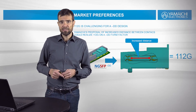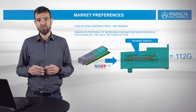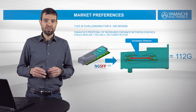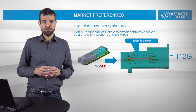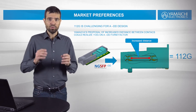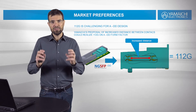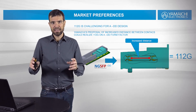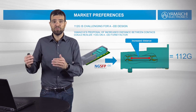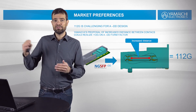We think that 112G is very challenging for the double density approach. With NGSFP, Yamaichi suggested significantly increasing the distance between the first and the second row. This was possible because we skipped one innovation cycle and designed directly for 112G.